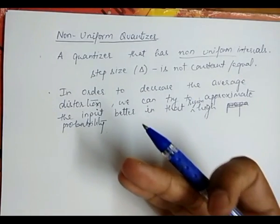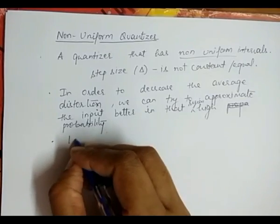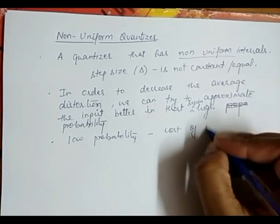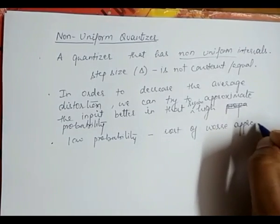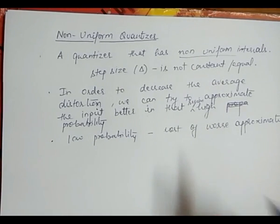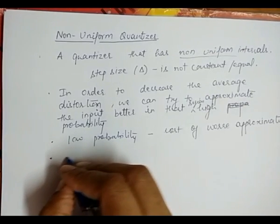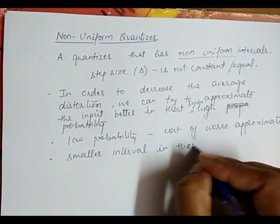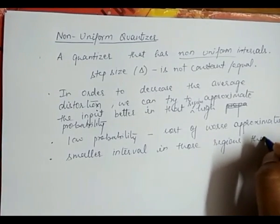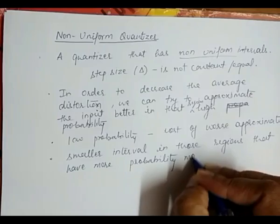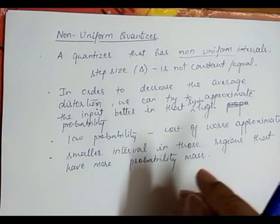And, at the cost of worst approximation in the region having lower priority — meaning if the input is having lower priority, then we allow a cost of worst approximation for symbols having low priority. We can do this by making the quantization intervals smaller in those regions that have more priority mass, and we make smaller intervals in those regions that have more priority mass.